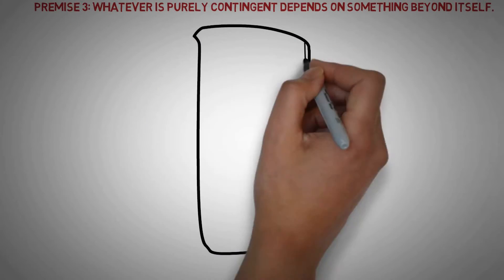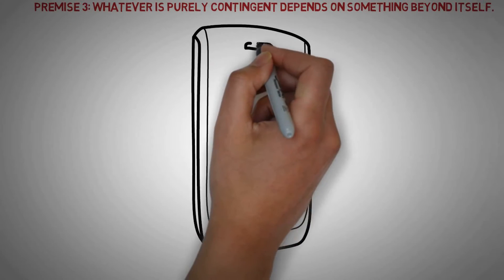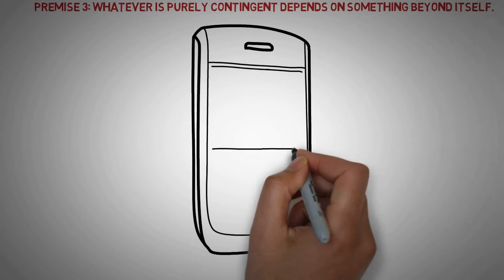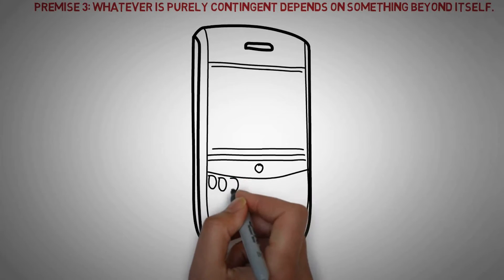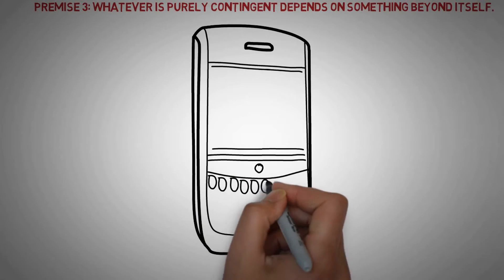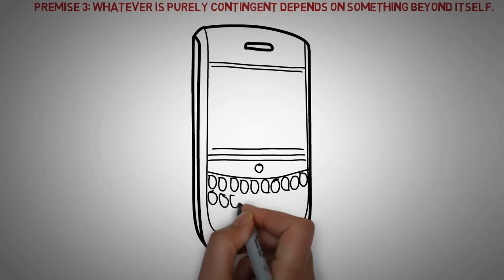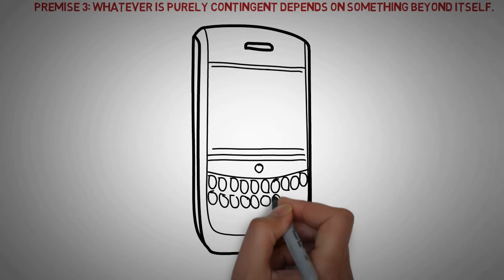To help us think about this principle, imagine a high-tech phone that is yet to be invented. It's not an actual phone, right? There's no actual phone like this. Rather, it's a potential phone. This phone is an example of a purely contingent reality. No part of it has self-existence. That's why it doesn't already actually exist.